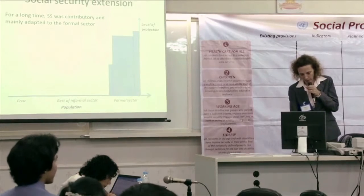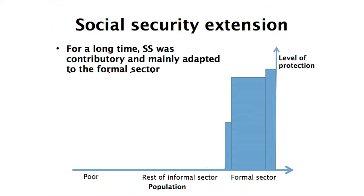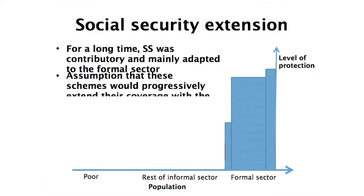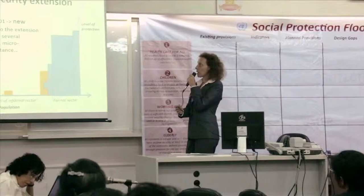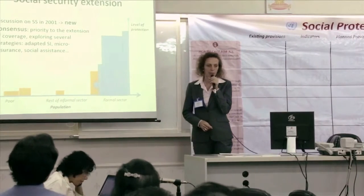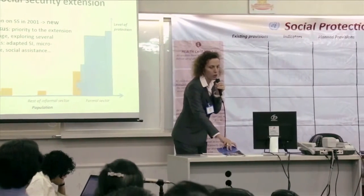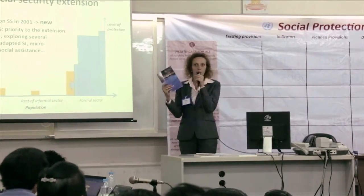For a long time, social security was mainly contributory, compulsory, and adapted to the formal sector. The ILO and others assumed that schemes would progressively cover more people in the informal sector as it shrank. But this didn't happen — on the contrary, the informal sector is still large and even growing in some parts of the world.